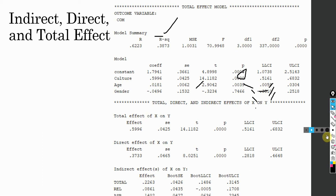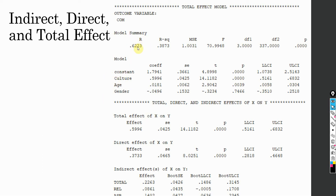Here is the final part of the output — the total effect model showing the impact on commitment by culture, age, and gender. The total effect is 0.5996. The R — correlation of these exogenous variables with commitment — is 0.6223. The R-square is 0.3873, meaning 38.73% of change in commitment can be accounted for by culture, age, and gender, of which just culture and age are significant.